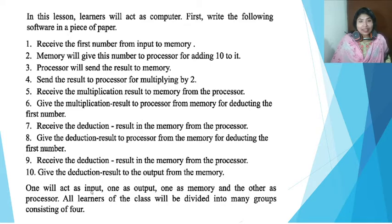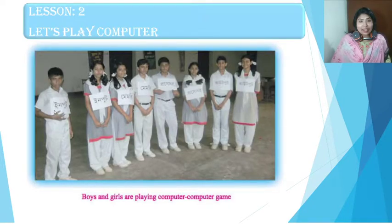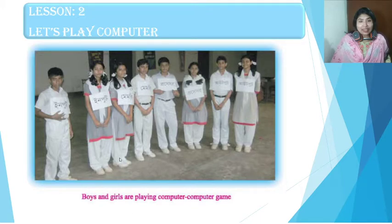One student will act as input, one as output, one as memory, and the other as processor — making one group. Another group will similarly have one holding input, one holding output, one holding memory, and one holding processor. All students in this class will be divided into groups of four. In this picture you can see two students holding input, two holding memory, two holding processor, and two holding output — because they are showing two groups together. But in one group there is one input, one output, one memory, one processor.